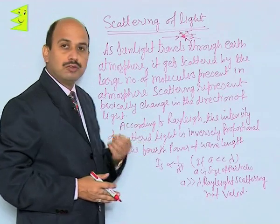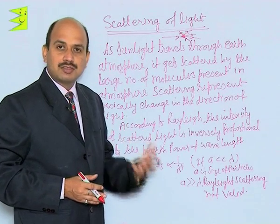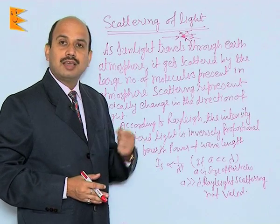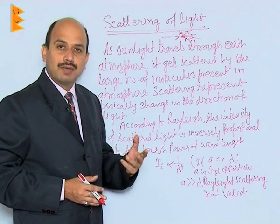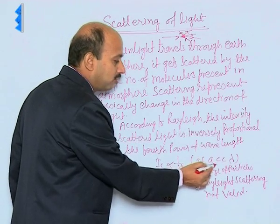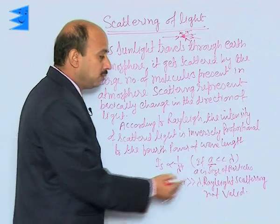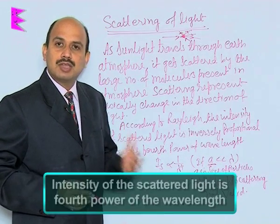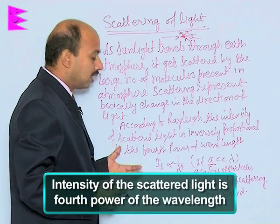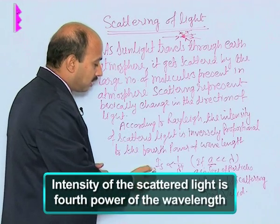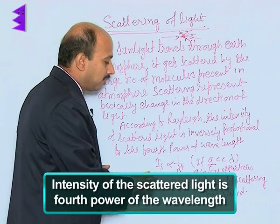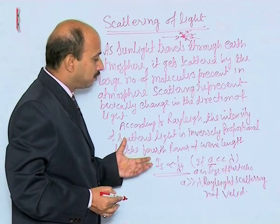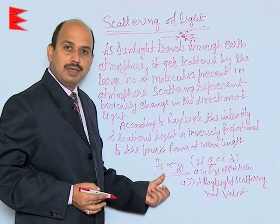When light falls on molecules, it gets scattered in all directions. The condition for this is that the size of the molecule must be much smaller than the wavelength. If 'a' is the size of the molecule, which is much less than the wavelength lambda, then Rayleigh's scattering is followed, because Rayleigh first dealt with scattering. The Rayleigh's relation states that the intensity of scattered light is inversely proportional to the fourth power of the wavelength.